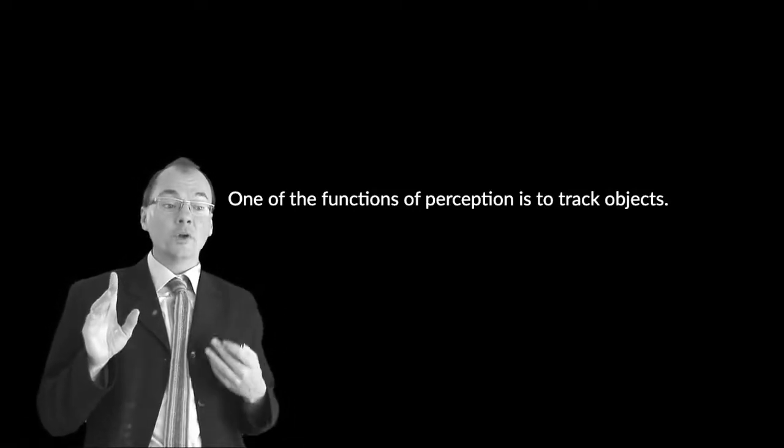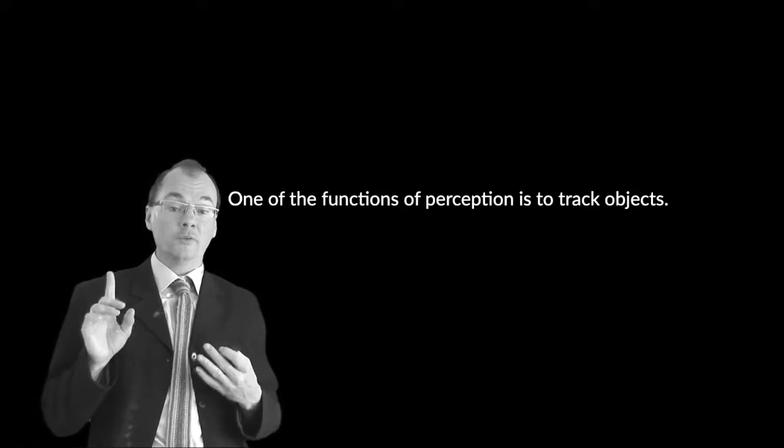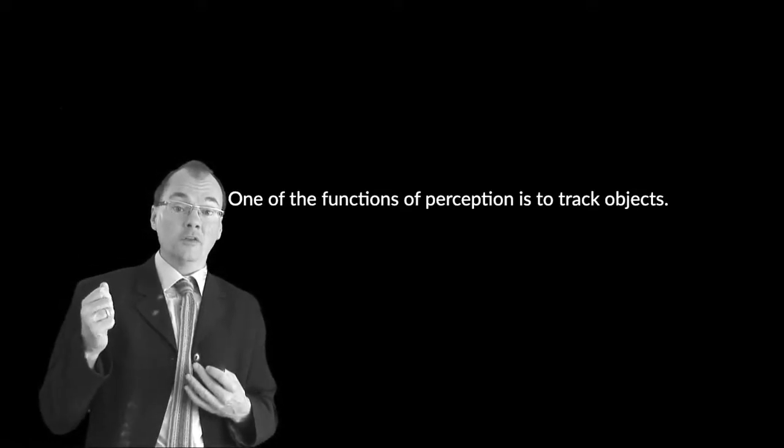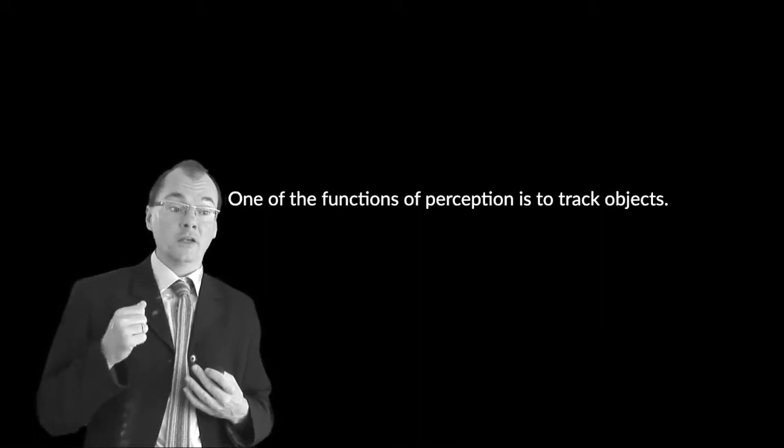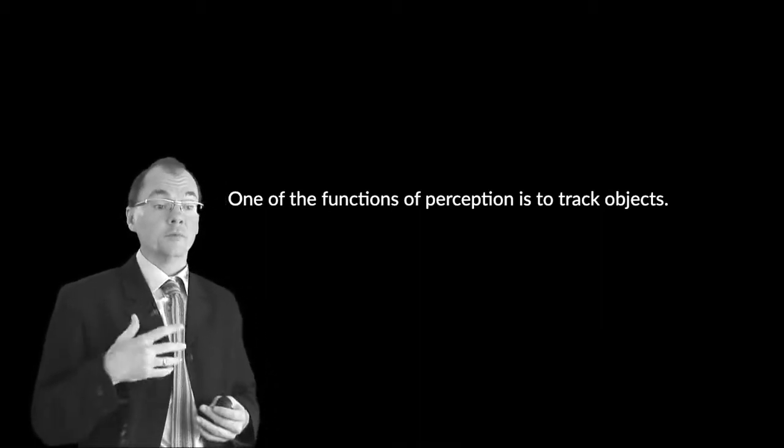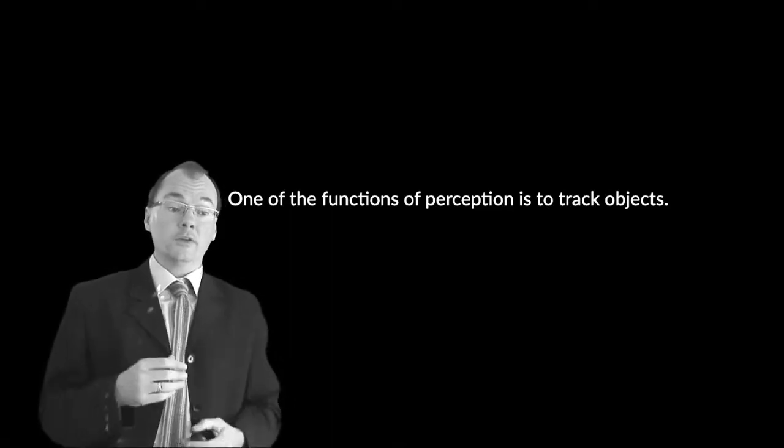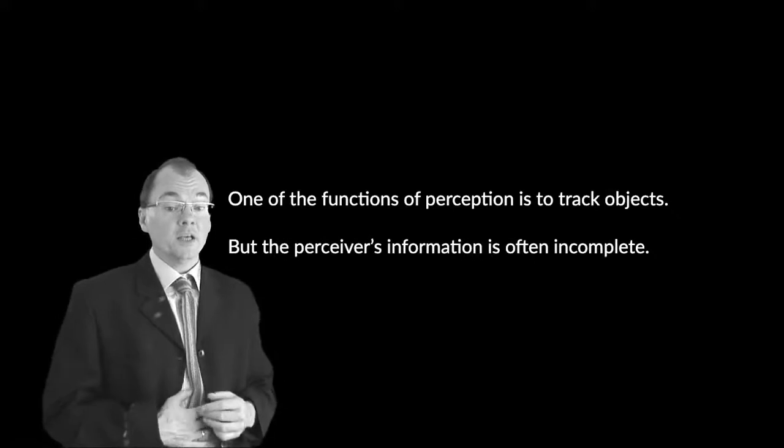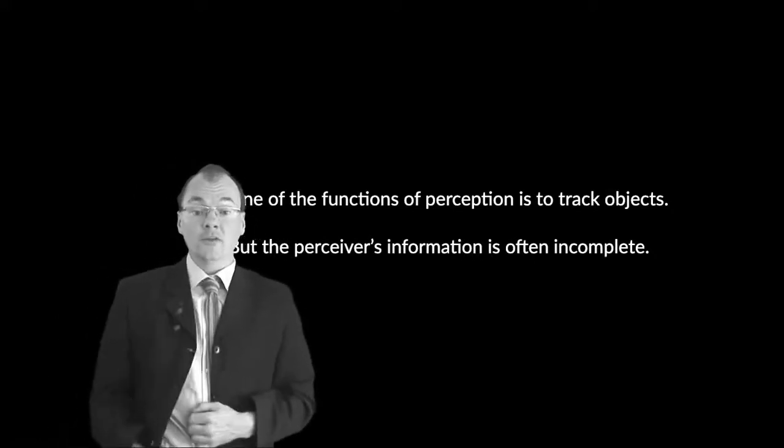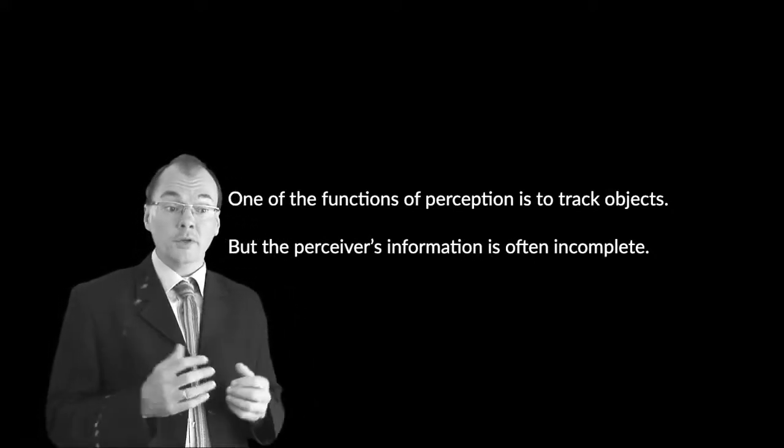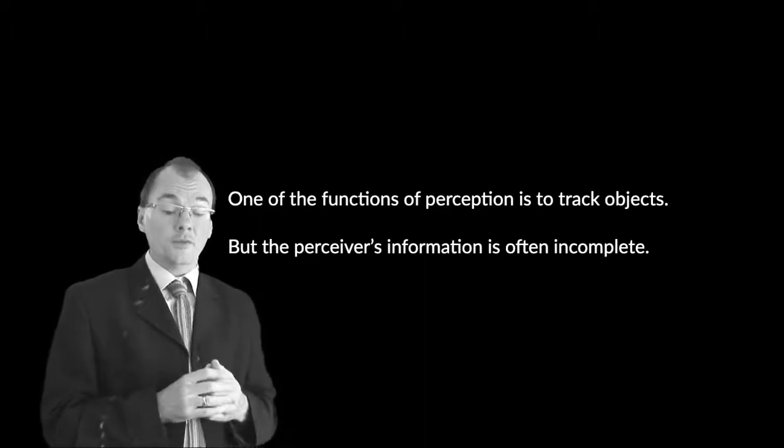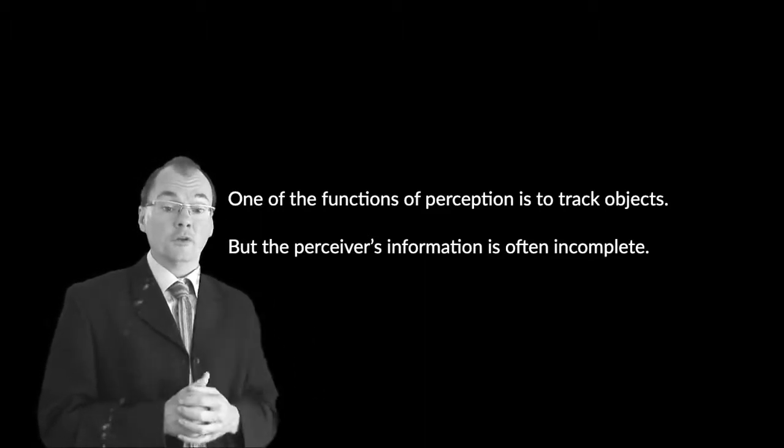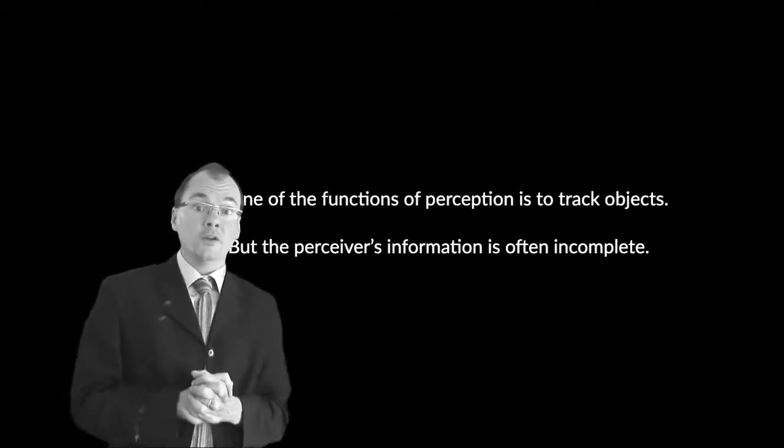The first thing we want to acknowledge is that one of the functions of perception is to track objects. Perception isn't just about surfaces arranged in space and the way that they reflect light and so on, the smells of things and the rest. It's also about the movements of objects. So perception involves time. But importantly, your information as a perceiver is often incomplete, perhaps always incomplete. It's very common, indeed, that you only have partial information about an object.